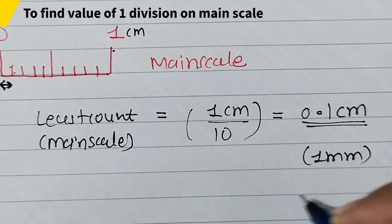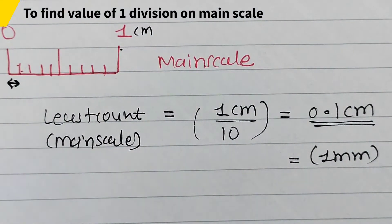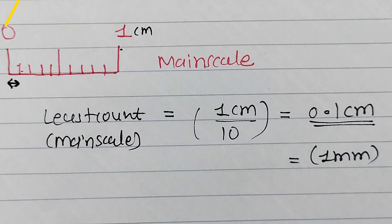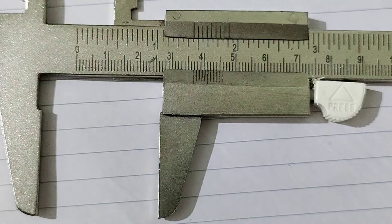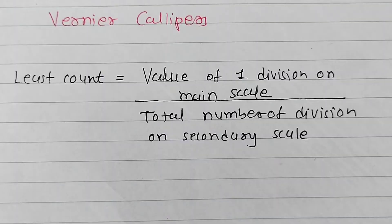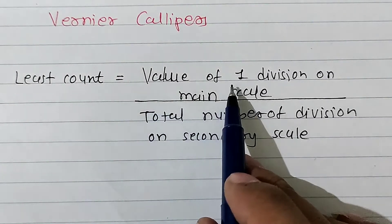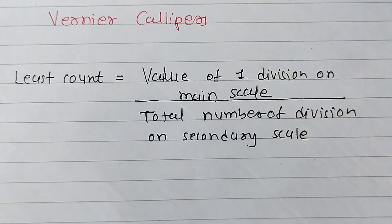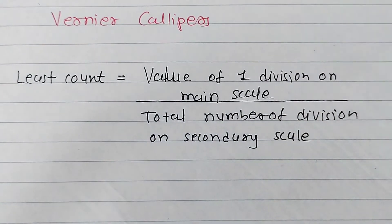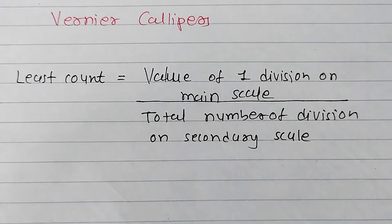This is the least count of the main scale. Now we want to find the least count of the Vernier calipers. Here is the formula: the least count equals the value of 1 division on the main scale divided by the total number of divisions on the secondary scale.